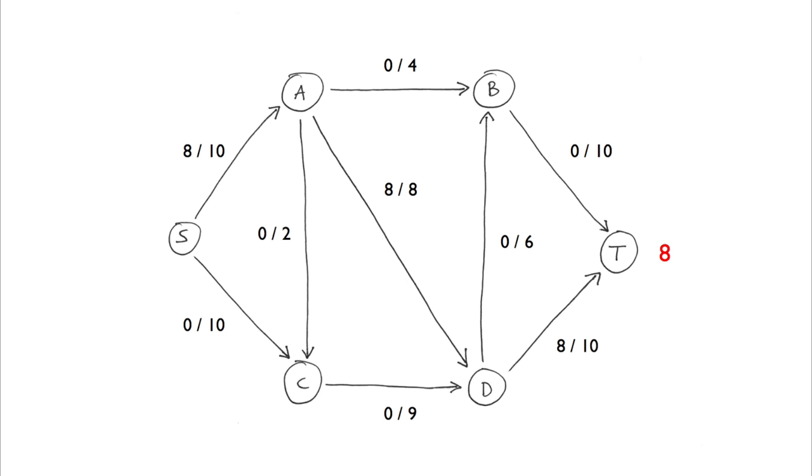This looks like a good one. The bottleneck capacity is 2 in this case, because edge DT only has a capacity of 2. Let's update the flow with this value.